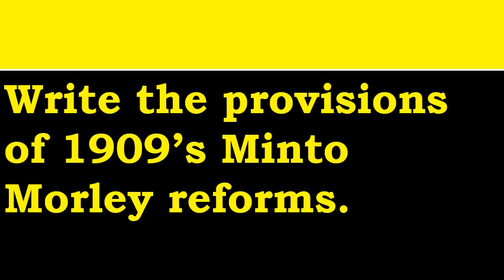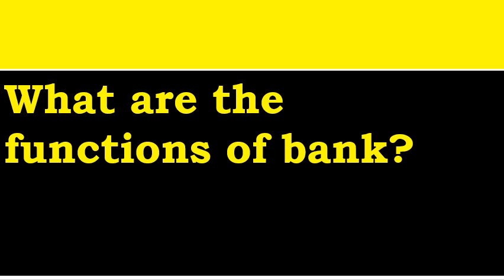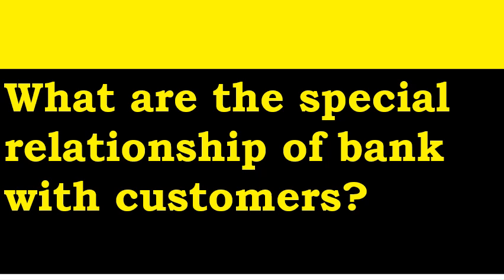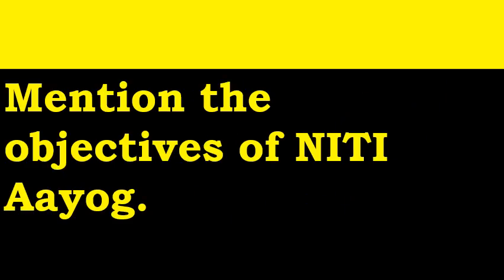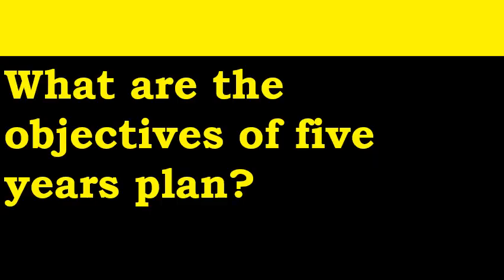Write the provisions of the 1909 Minto-Morley Reforms — there will be four points to memorize. What are the functions of a bank? What are the special relationships of a bank with customers? You need to learn both general and special relationships. Mention the objectives of Niti Aayog. What are the objectives of the Five Year Plan?